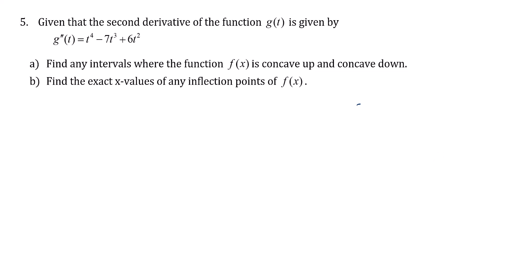So we are going to do a sign chart for the second derivative, g double prime. We need to figure out the critical numbers for this second derivative. Critical numbers are where it's undefined—this was never undefined—or where it equals 0. So we're going to figure out where this equals 0.